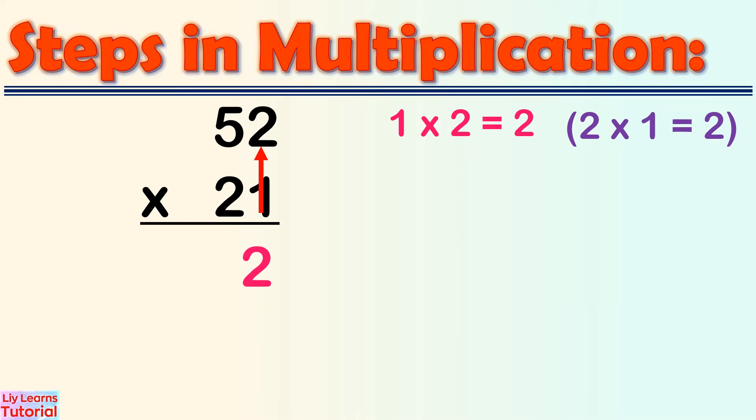Step 2: Multiply the 1s digit of the multiplier by the 10s digit of the multiplicand. That is, 1 times 5 equals 5.